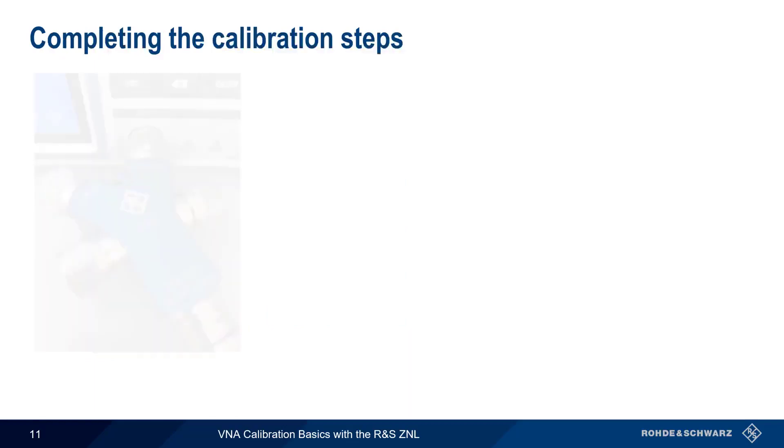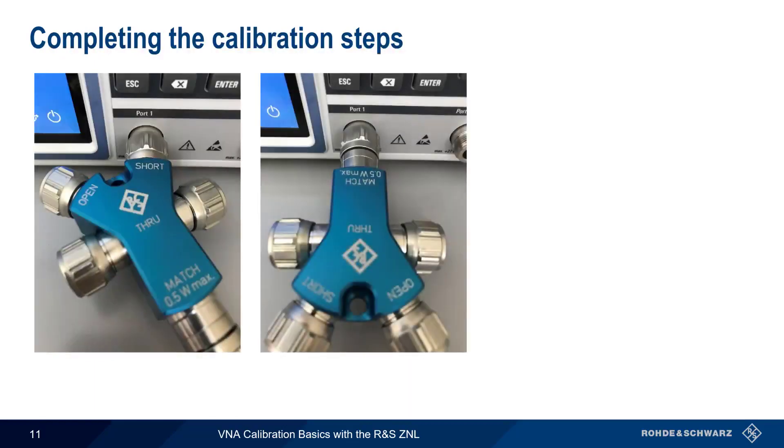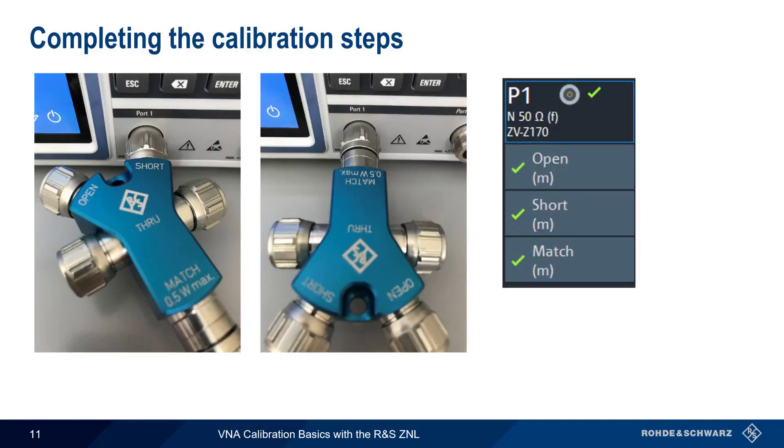We repeat this process again for the short and match, until all three boxes have green checks. The final step is clicking on Apply in the bottom right corner to make the calibration data active.